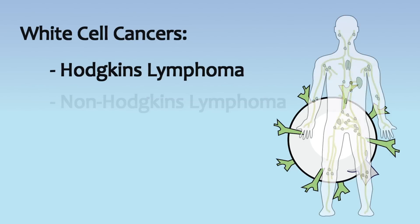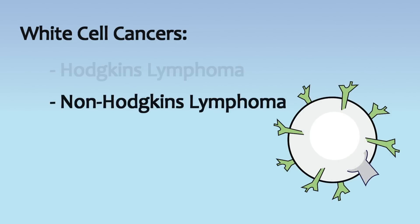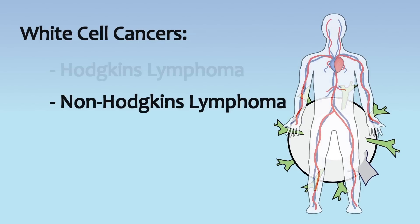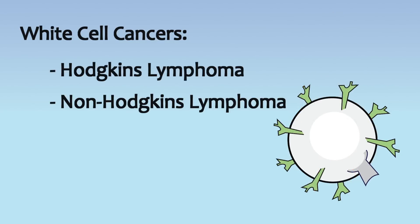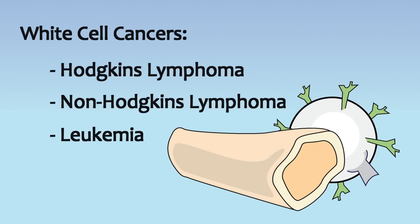Hodgkin's lymphomas affect white cells in the lymphatic system. Non-Hodgkin's lymphomas affect white cells found in the bloodstream. And leukemia affects immature white cells in the bone marrow.